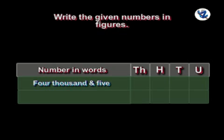Four thousand and five. We will write four in thousands place, zero in hundreds place, zero in tens place, five in units place.